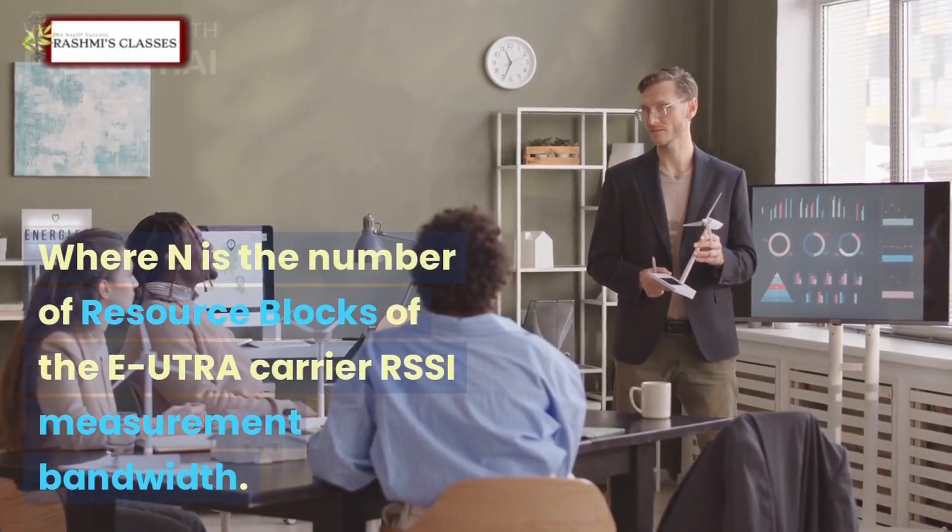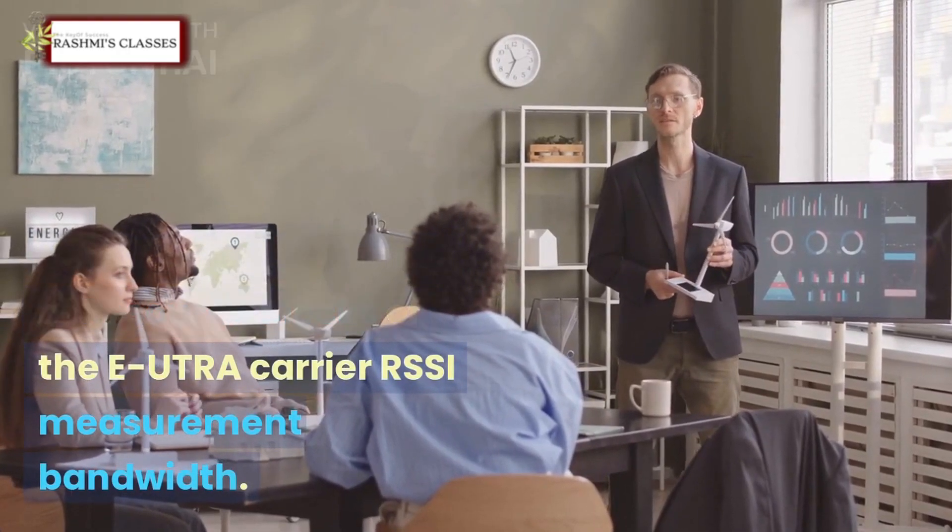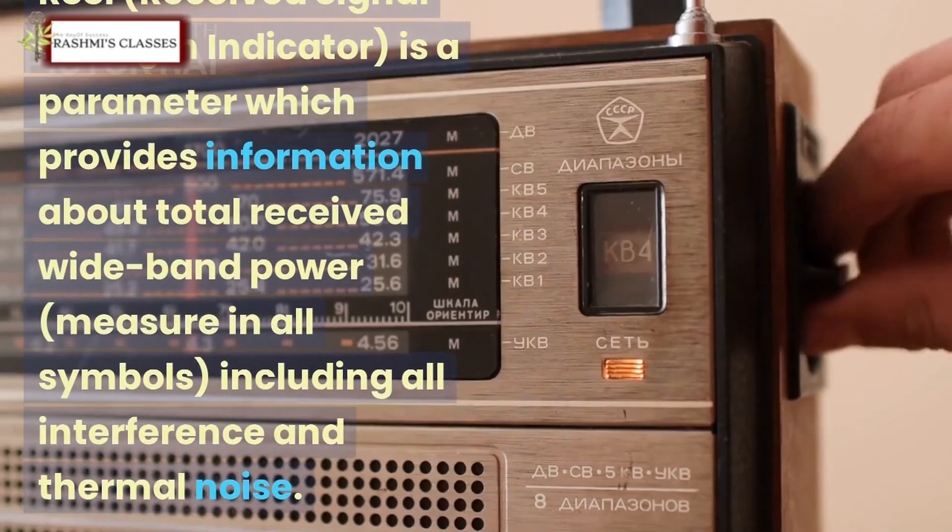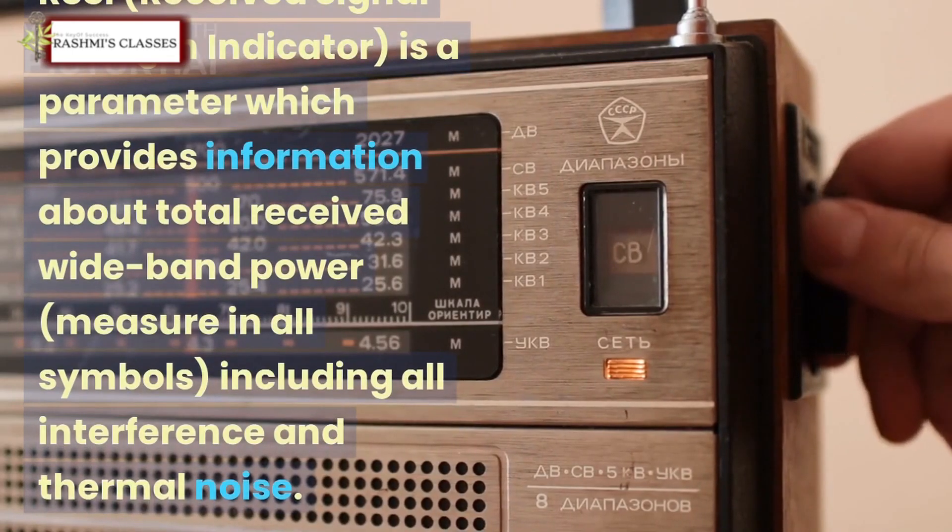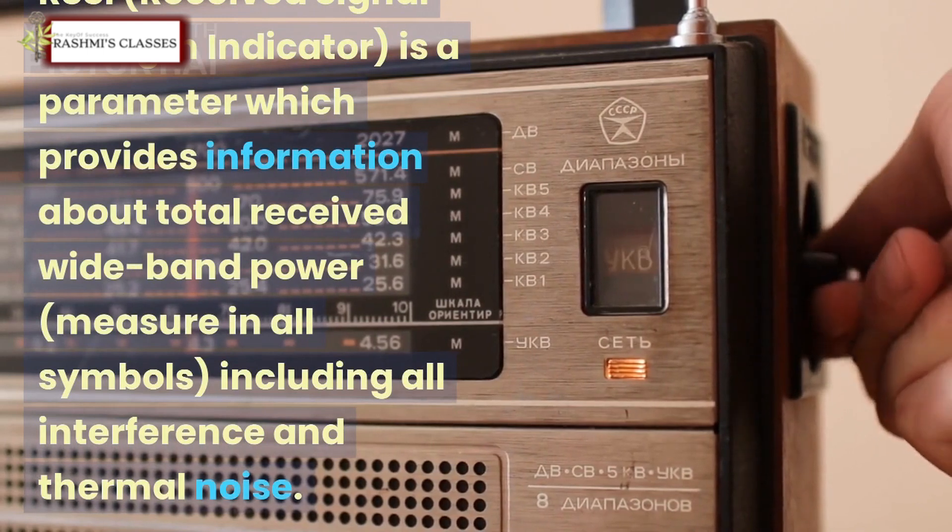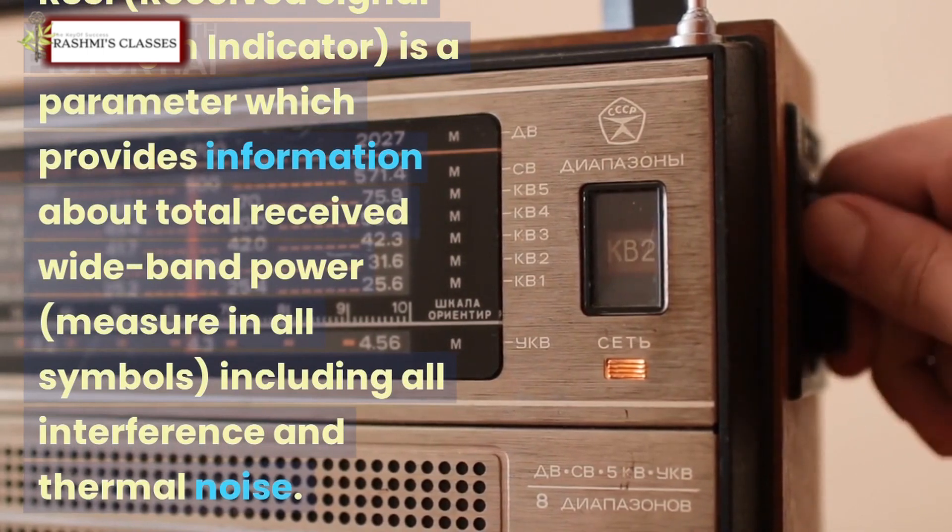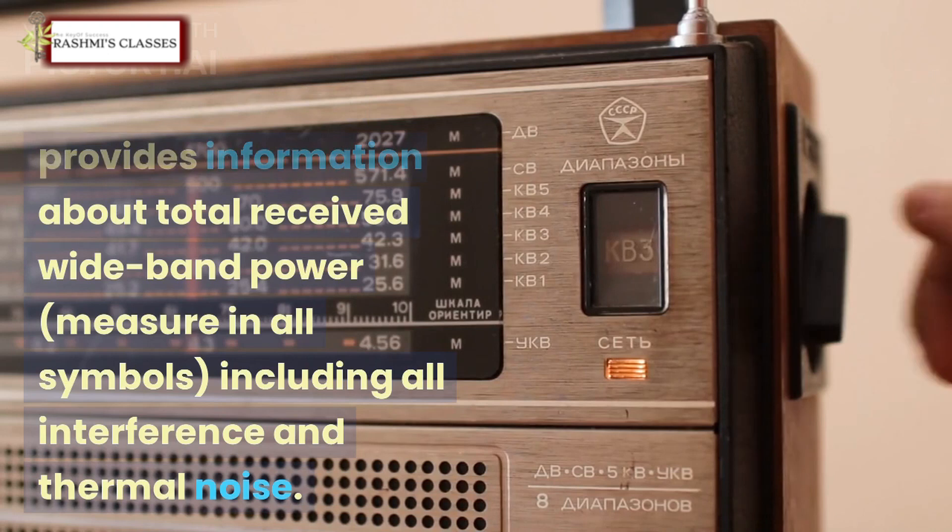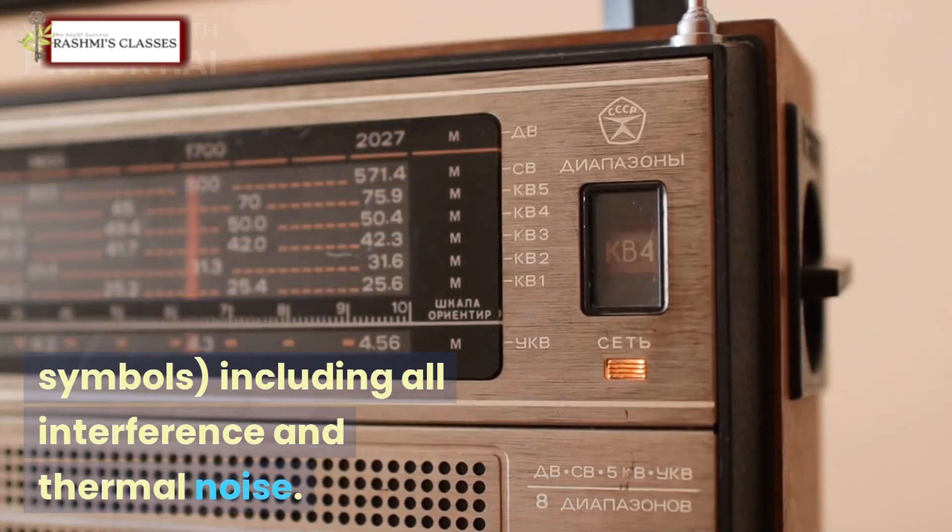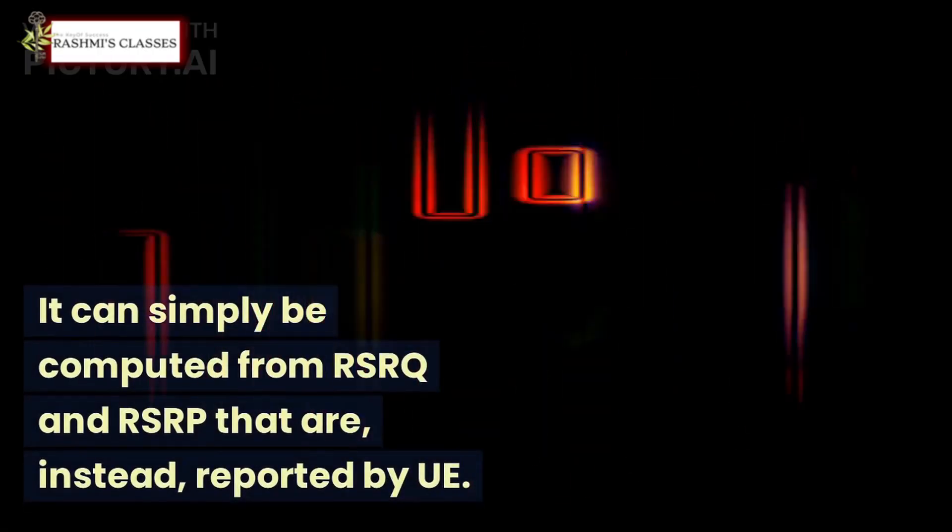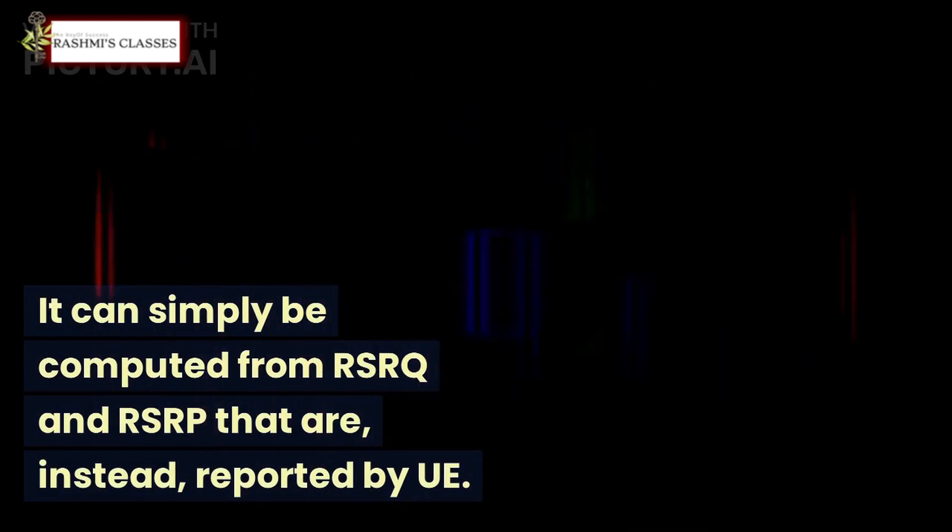RSSI - Received Signal Strength Indicator - is a parameter which provides information about total received wideband power measured in all symbols including all interference and thermal noise. RSSI is not reported to eNodeB by UE; it can simply be computed from RSRQ and RSRP that are instead reported by UE.